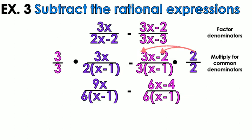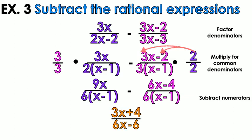On the other side, distribute the 2 to get 6x minus 4 on top, and 2 times 3 is 6, leave the x minus 1 on the bottom. Now subtract the numerators: 9x minus 6x gives 3x, and then the negative in the middle and the minus in front of the 4 make a positive, giving 3x plus 4. The denominator is 6x minus 6. Nothing further simplifies, so that's the answer.